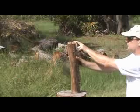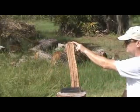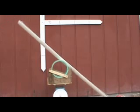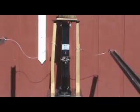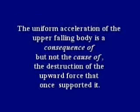Especially since the towers were designed with large safety factors and much of the structure was blown outside the footprint and away from the lower undamaged structure. The wedge uniformly accelerated because the force from my hand squeezing the log together was removed first. The bowling ball uniformly accelerated because the force from the fishing line holding the ball was removed first. The block on the jack uniformly accelerated because the supports were pulled first. And the towers uniformly accelerated because the underlying supports were blown out first. The floors did not pancake because the impacts would not allow the upper roof to uniformly accelerate — but explosives blowing out the lower structure would allow the uniform acceleration we observed. The uniform acceleration of the upper falling body is a consequence of, but not the cause of, the destruction of the upward force that once supported it.